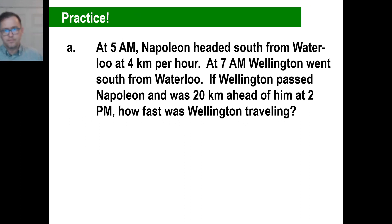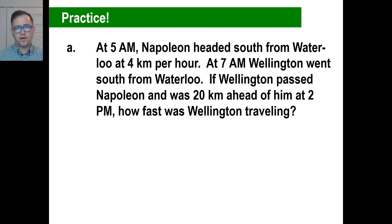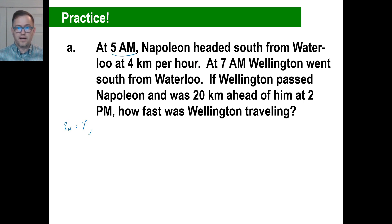Alright, problem 8. At 5am, Napoleon headed south from Waterloo at 4 kilometers per hour — so the rate of Napoleon is 4. We start at 5am and 7am and finish at 2pm. The time of Napoleon is 5am to 2pm, which is 9 hours.